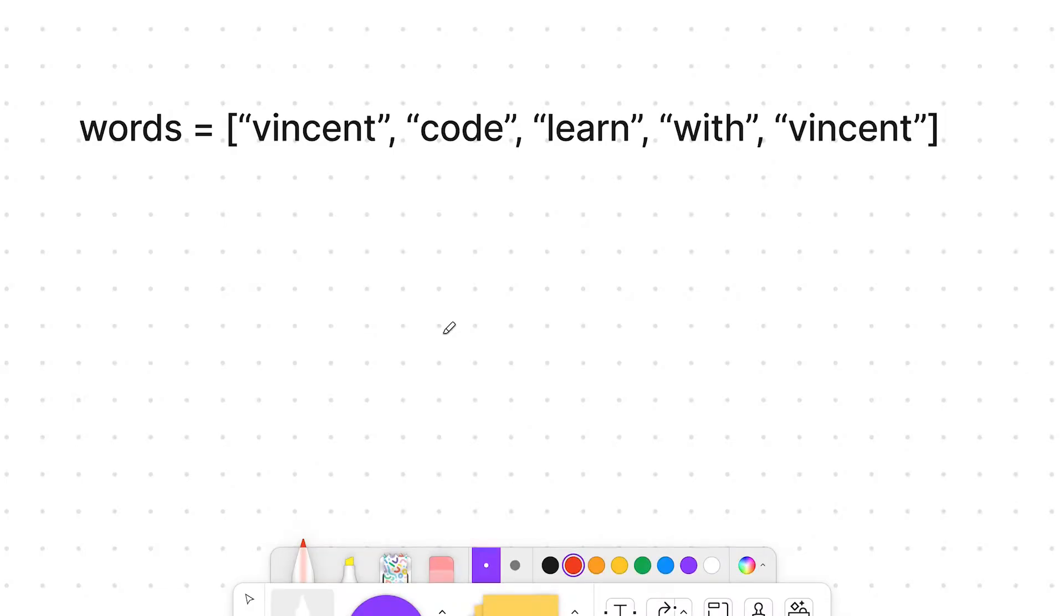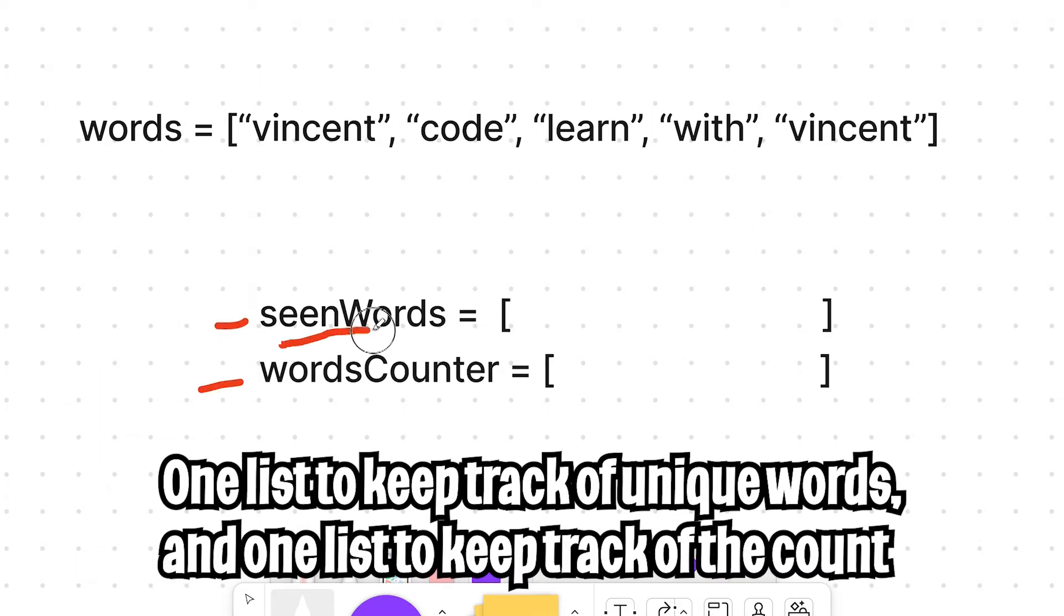For example, the interview question that I failed, I got asked to count the unique number of words inside a list. So at that time, I was still learning how to code and I didn't even know about dictionaries. And I gave a really naive solution, where I basically create two lists.